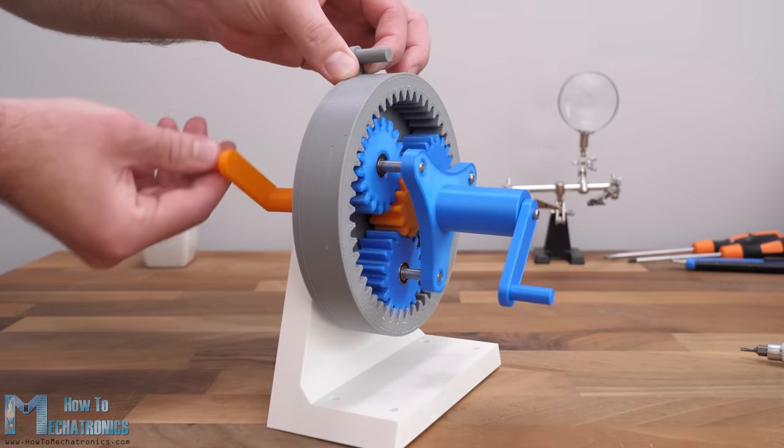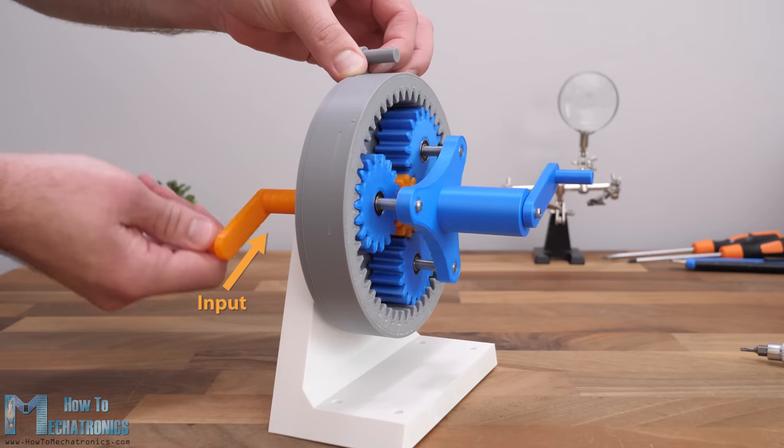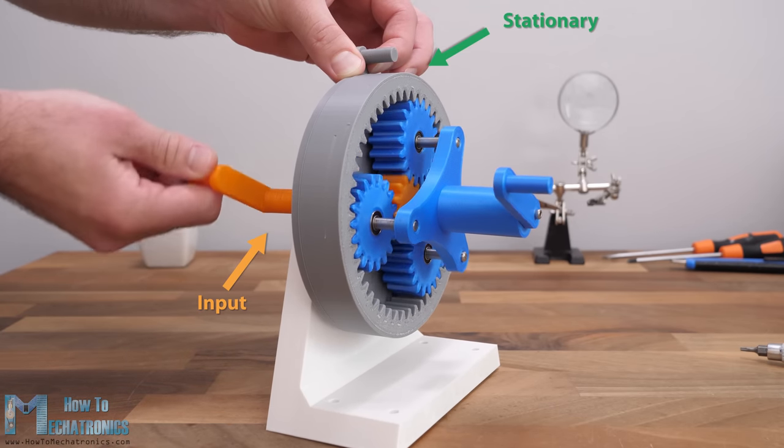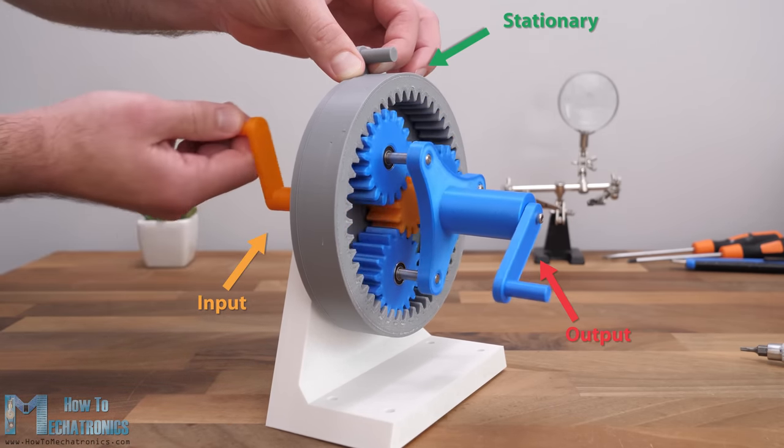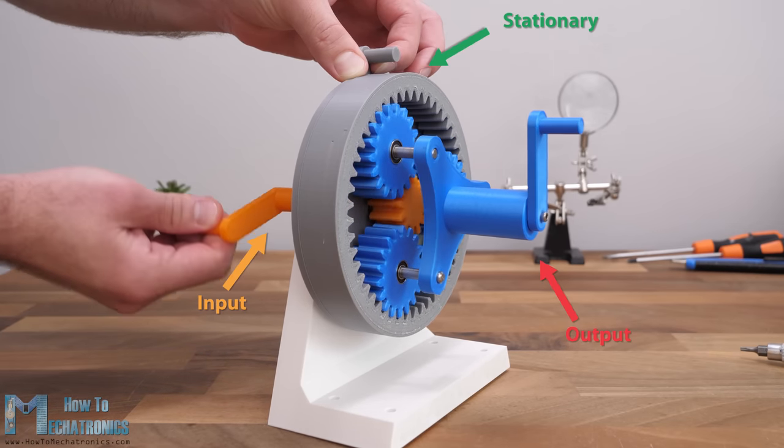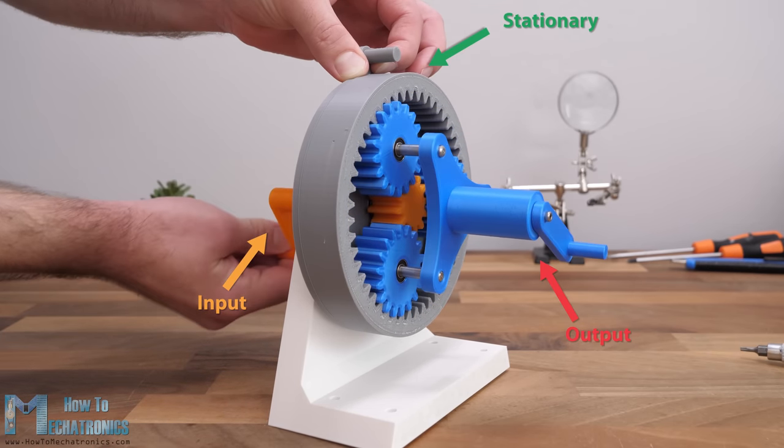Here we can see that if we rotate the sun gear while holding the ring gear stationary, the planet carrier will rotate at a reduced speed. In this case that's 5 times slower or that's a ratio of 5 to 1.